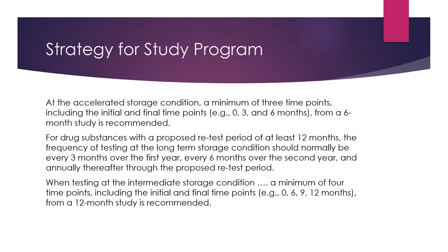For the study program at accelerated storage conditions, a minimum of three time points — including the initial and final — that is 0, 3 and 6 months from a 6-month study is recommended. However, most manufacturers test at 0, 1, 2, 3, 4, 5 and 6 months, which is not really required. You can do 0 and 3 months, and if there is significant variation between those two points, you can add the 4 and 5 month time points before the 6-month study is completed.